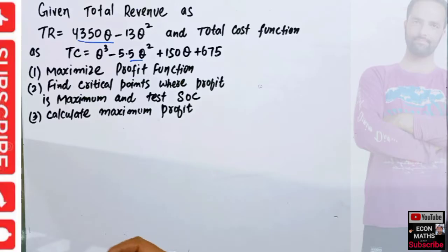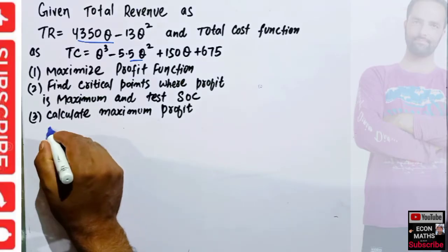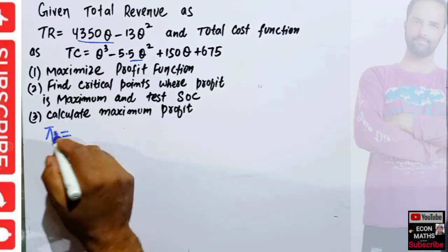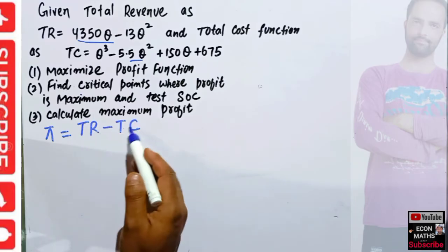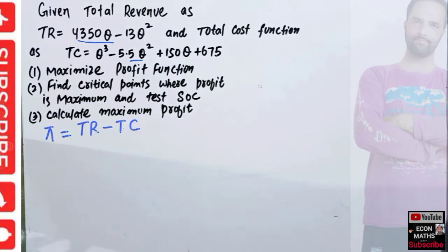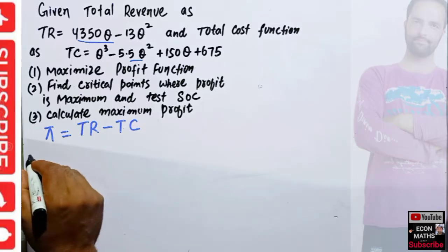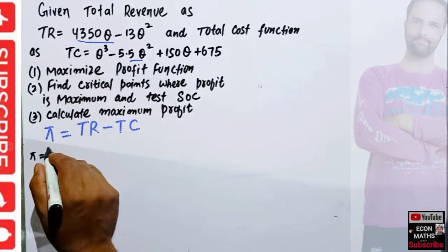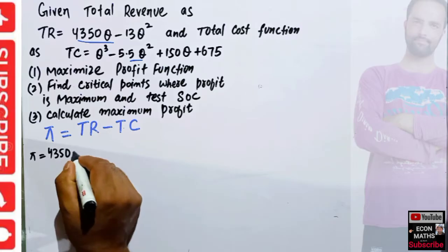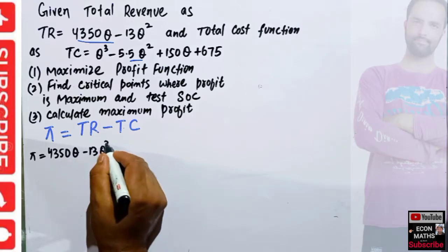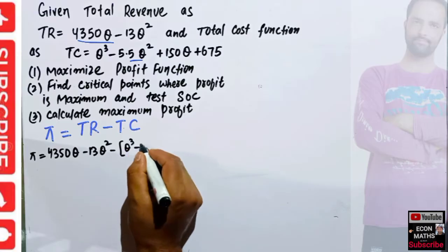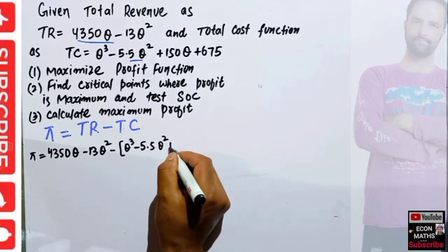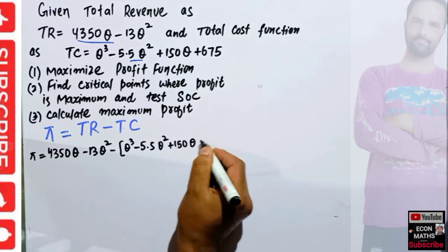Given the total revenue function and total cost function, we first need to find the profit function. Profit, denoted by π, is equal to total revenue minus total cost. So π = 4350Q − 13Q² minus (Q³ − 5.5Q² + 150Q + 675).